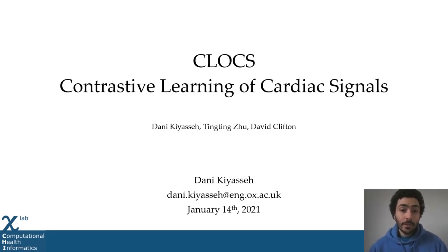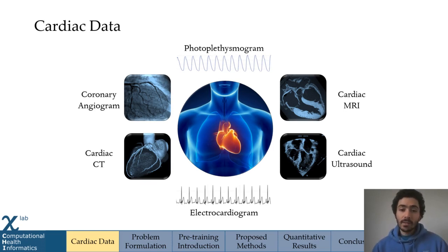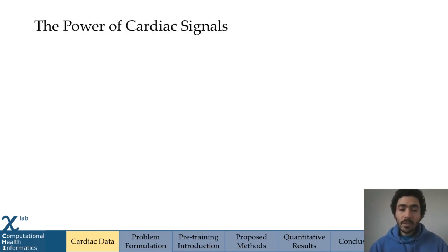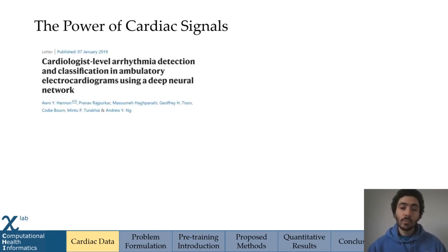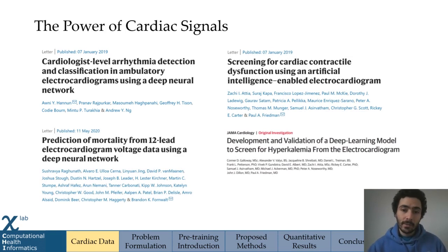This presents our work on CLOCKS, which is Contrastive Learning of Cardiac Signals, work done with David Clifton at the University of Oxford. Cardiac data is simply data that pertains to or is retrieved from the heart. There are various imaging modalities in addition to time series modalities. For this presentation we'll be focusing on the electrocardiogram, a signal that measures the electrical activity of the heart. When coupled with deep learning systems, it can be used to perform cardiac arrhythmia classification, detect abnormalities in heart functioning, and even detect mortality. However, many of these systems depend on abundant labeled data.